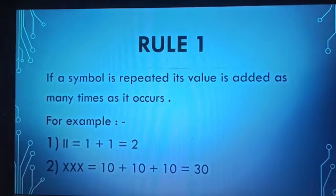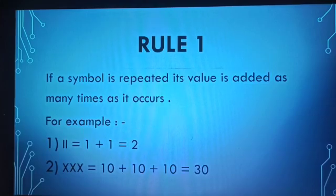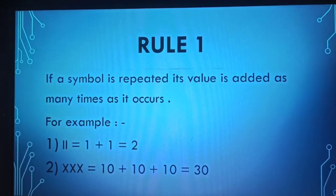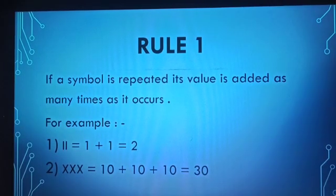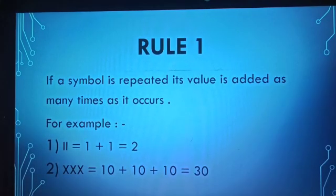Now we will discuss the rules for this system of numeration. Rule 1: if a symbol is repeated, its value is added as many times as it occurs. For example, 1 is represented by I, so II equals 1 plus 1, which is 2. In the second example, 10 is represented by X, so XXX equals 10 plus 10 plus 10, which is 30.